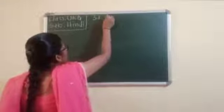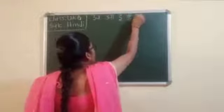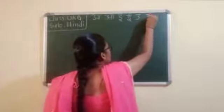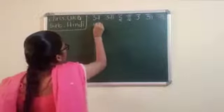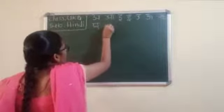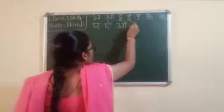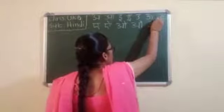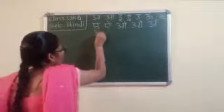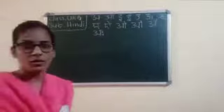A, A, I, I, U, U, U, Ai, U, A, U, A. These are the Swaraakshara vowel letters.